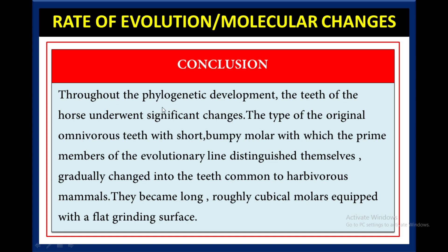Throughout the phylogenetic development, the teeth of the horse underwent significant change. The original omnivorous teeth with short, bumpy molars, with which the primitive members of the evolutionary line distinguished themselves, gradually changed into the teeth common to herbivorous mammals. They became long, roughly cubical molars equipped with a flat grinding surface.